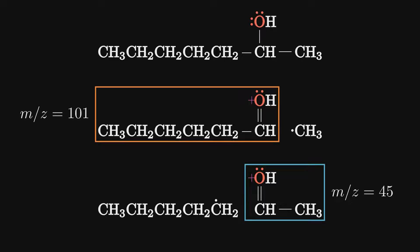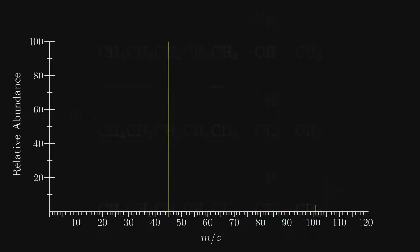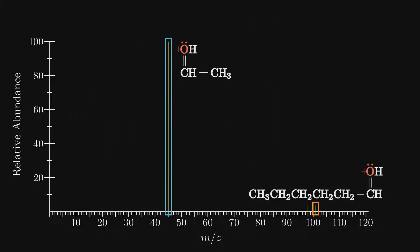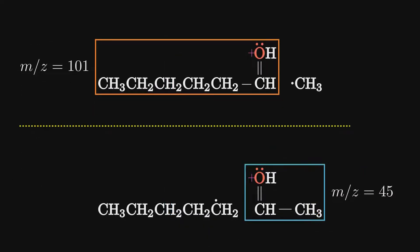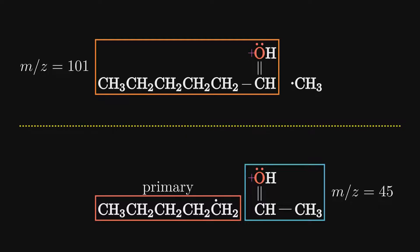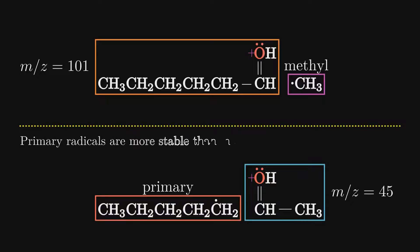The peak at 45 is obviously the base peak, but why is it so much higher than the other produced by the same process? A closer look shows the first makes the mass 45 fragment and a primary radical, while the second makes the mass 101 fragment and a methyl radical. Remember that the more stable the radical or cation, the more likely they are to form, so this is what favors the production of the mass 45 fragment.